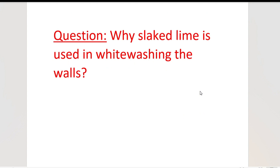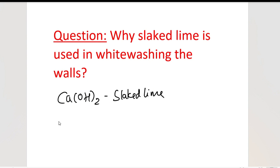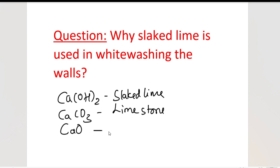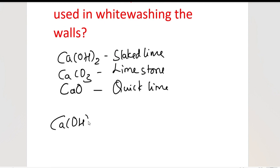Let's take a question: why is slaked lime used in whitewashing the walls? Whitewashing means applying a coating to the walls. Slaked lime is calcium hydroxide in its solid form. CaCO3 is known as limestone. Calcium oxide is known as quicklime. These are the different calcium-containing compounds. When you take slaked lime and dissolve it in water, it is not completely soluble but partially soluble.